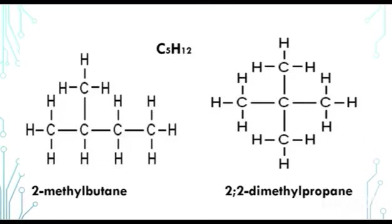Last example of chain isomers — we have 2-methylbutane and 2,2-dimethylpropane. We can confirm that there are 5 carbon atoms on both sides. Counting the hydrogen atoms gives us 12 on each side. So we have the same molecular formula but different types of chains.